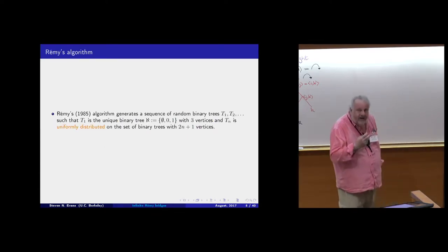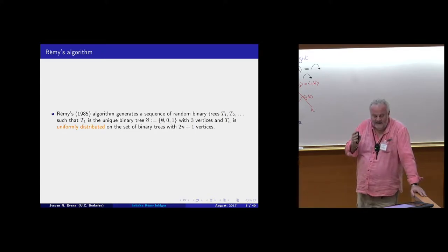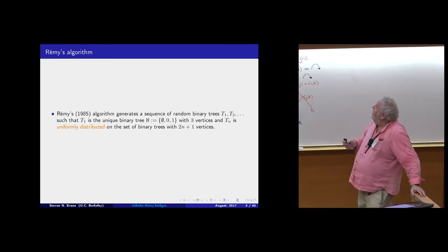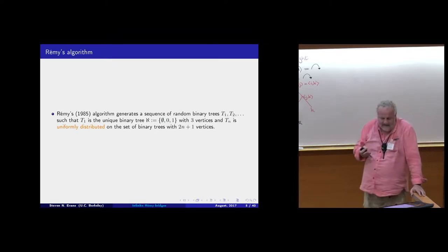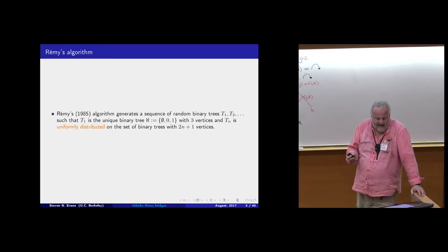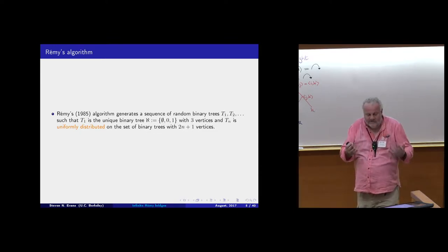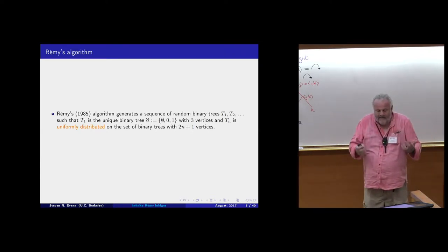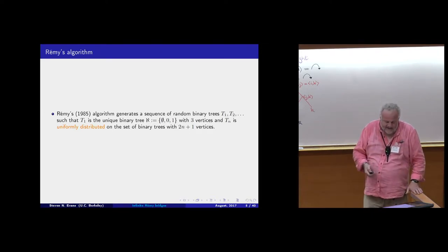In 1985, Rémy introduced an algorithm that generates a sequence of random binary trees T1, T2, T3, and so on, so that T1 is the only binary tree with three vertices, and Tn is uniformly distributed on the set of binary trees with 2n+1 vertices. Essentially what it does is grow such trees, although there's a little bit of rearrangement that goes along with the growth process.